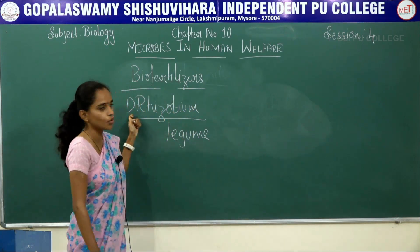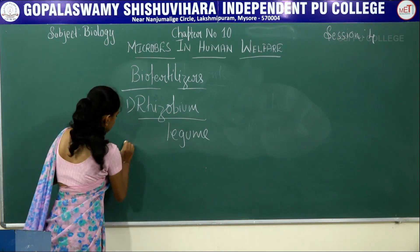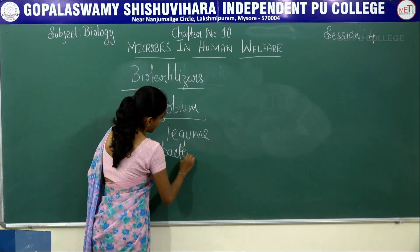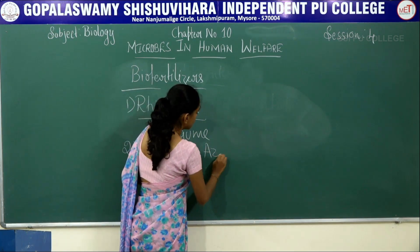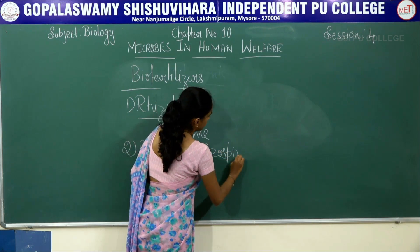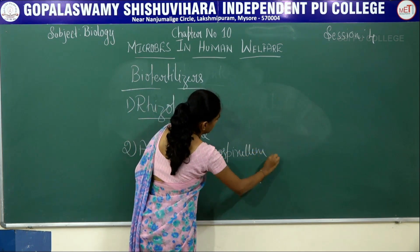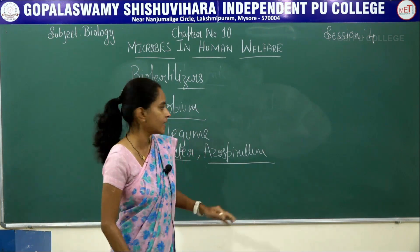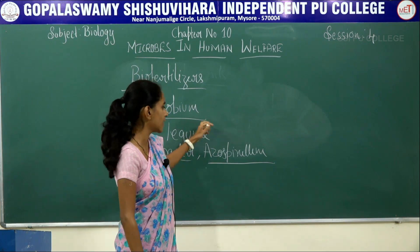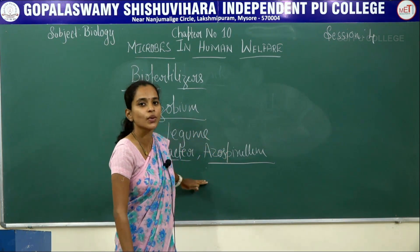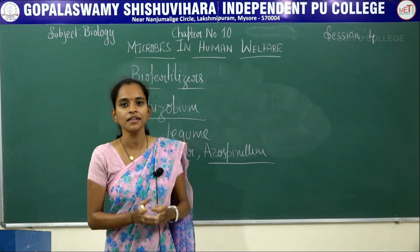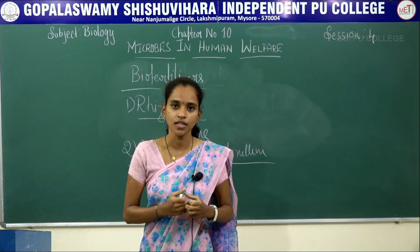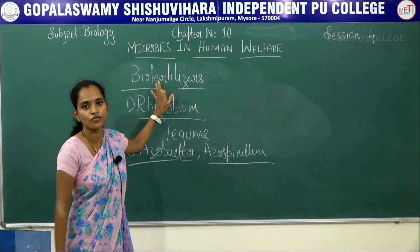The second bio fertilizer is Azotobacter and Azospirillum. These are free-living bacteria, not associated with any leguminous or other plants. Their function is fixing nitrogen as well as increasing the fertility of the soil.